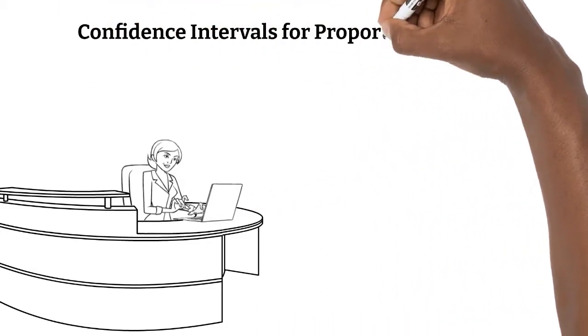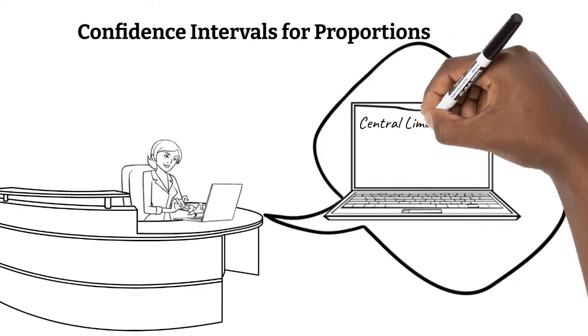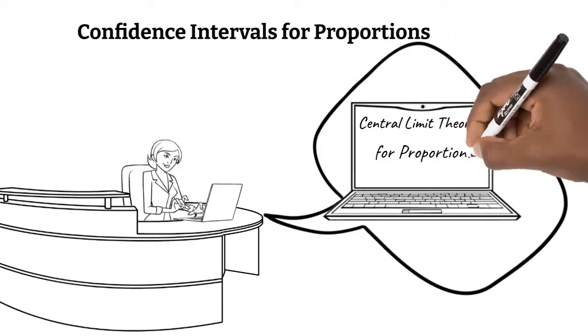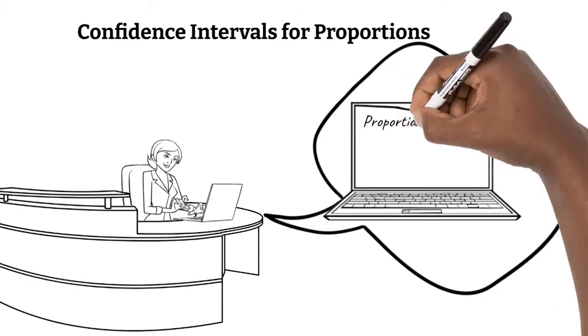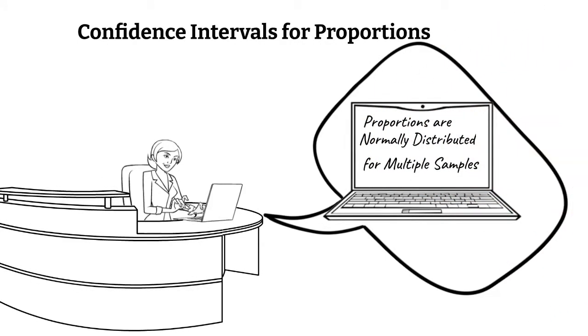In this video, we'll be looking at confidence intervals for proportions. In a previous video, we learned about the central limit theorem for proportions. We learned that proportions are normally distributed if we survey multiple samples and certain conditions are met.